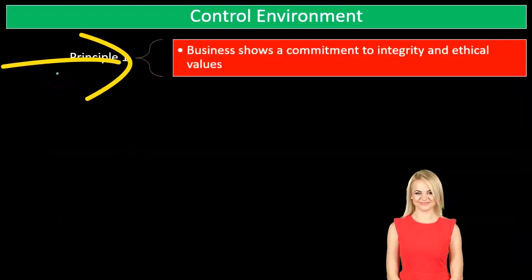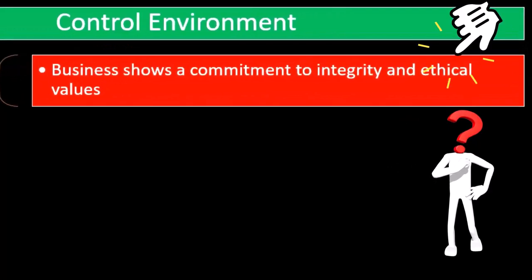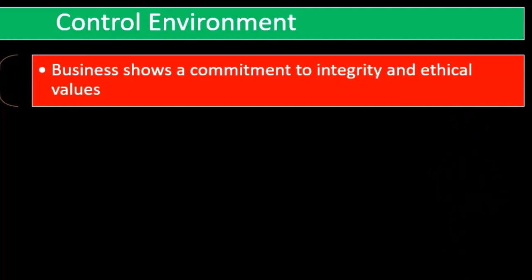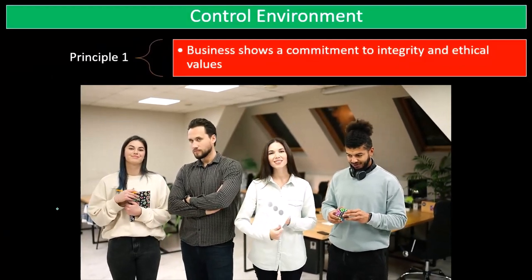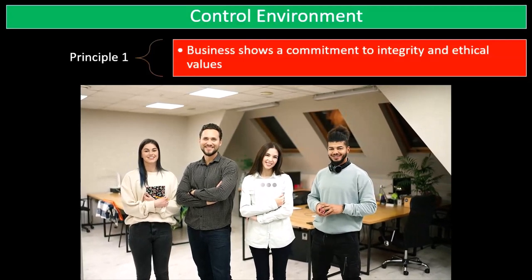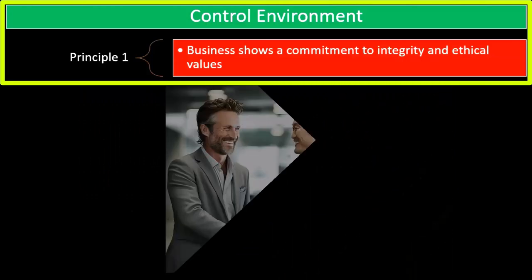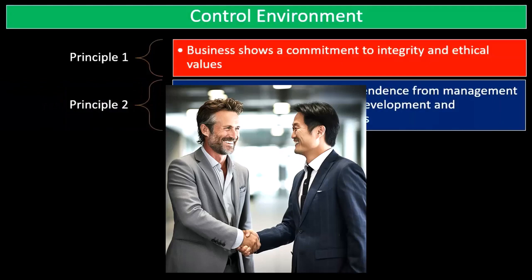We're going to start with the control environment, listing the principles related to it. First principle: the business shows a commitment to integrity and ethical values. We're looking at this in terms of controls of the organization as a whole. These things aren't always the easiest to write down and communicate, but we can get a feel for that by talking to people, inquiring about it, and writing down our impressions.